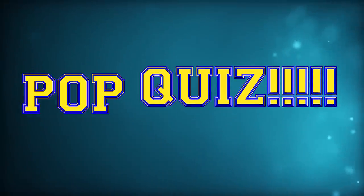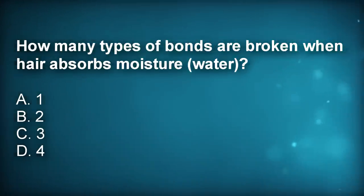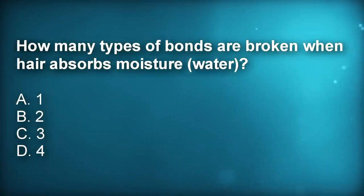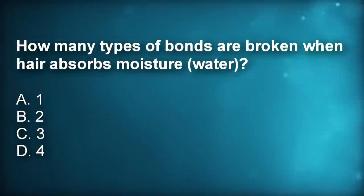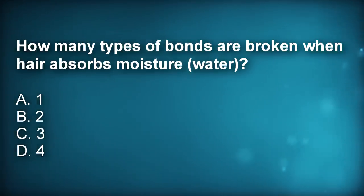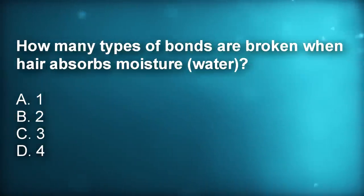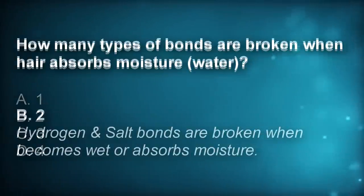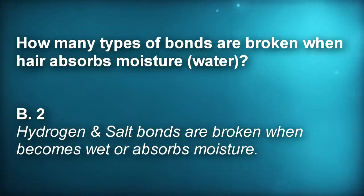Now that we've covered the four types of chemical bonds in hair, I want to give a short quiz to see how much you've been paying attention. The question is: how many types of bonds are broken when hair absorbs moisture? A) 1, B) 2, C) 3, or D) 4? Most of you probably answered A, thinking hydrogen bonds, which are indeed broken by water as well as heat. However, the correct answer is actually B — both the hydrogen and salt bonds break when hair absorbs water.